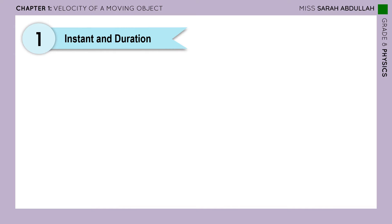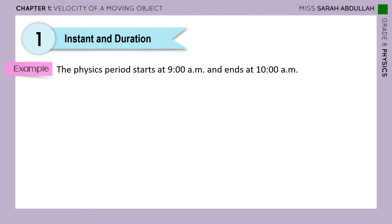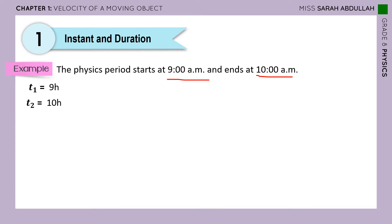Instant and duration — what is the difference between instant and duration? Let's give an example. The physics period starts at 9 a.m. and ends at 10 a.m. When does the physics period start? It starts at 9, so let's call 9 T1. When does it end? It ends at 10, so let's call 10 T2. T1 and T2 are called instants — they tell me exactly at what time something happens.